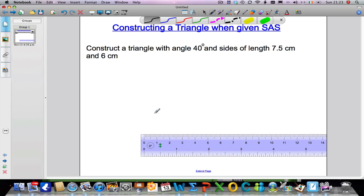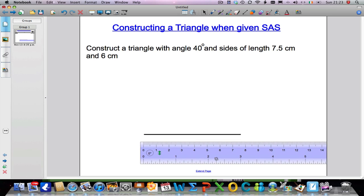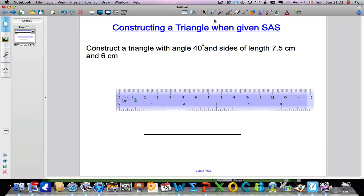So I'm going to draw a line that's 7.5 centimeters in length. It goes from 0 right the way up to 7.5 centimeters in length. I'll just move away my ruler for a second and I'm going to label my line 7.5 centimeters.